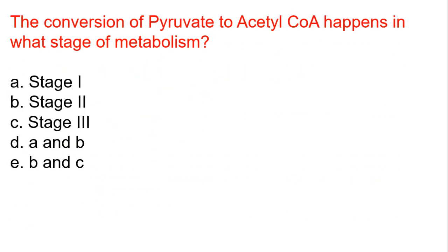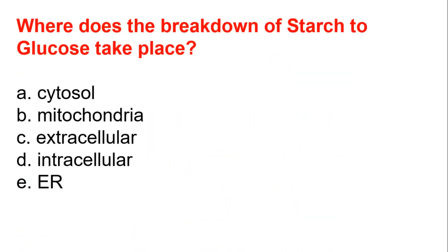The conversion of pyruvate to acetyl-coenzyme A happens in what stage of metabolism? The answer is B, which is stage 2. Next question: where does the breakdown of starch to glucose take place? This simply takes place in the extracellular matrix.